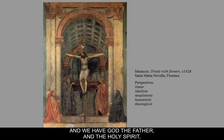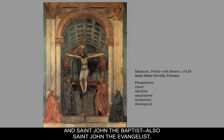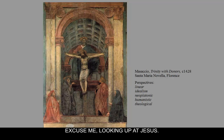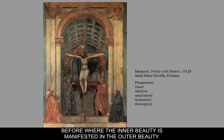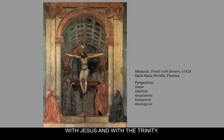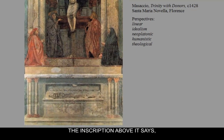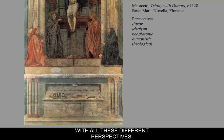We have God the Father, the Holy Spirit, and Jesus on the cross, with Mary presenting her son inside the archway and St. John the Evangelist looking up at Jesus. Jesus has the body of a Greek god — that idea of kalos where inner beauty is manifested in outer beauty. Outside the triumphal arch are the donors, who are not worthy enough to be inside with Jesus and the Trinity. Beneath that is a skeleton, and the inscription above it reads: 'What I am, you will become; what I was, you are.'